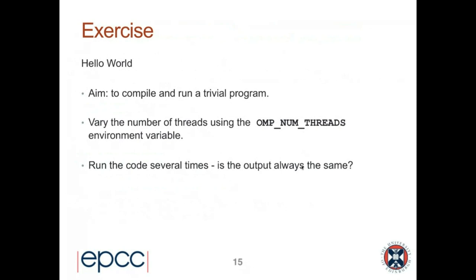That's enough information to get started on the practical exercises. I haven't really told you much yet about how to write parallel programs in OpenMP — that will come next week. Between now and then, what you might like to do is make sure you can get hold of the template source code, compile and run a trivial Hello World program, and then experiment with the OMP_NUM_THREADS environment variable to change the number of threads. Run the code several times and observe whether the output is always the same — and if not, can you figure out what's going on?